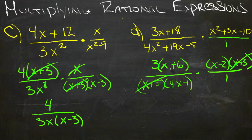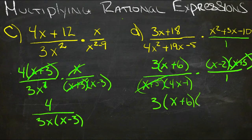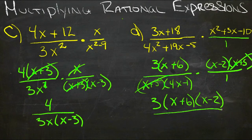And x plus 6, 4x minus 1. Nope, that's about it. Alright. So then we end up with 3 times x plus 6 in the numerator times x minus 2 from the other numerator over 4x minus 1.